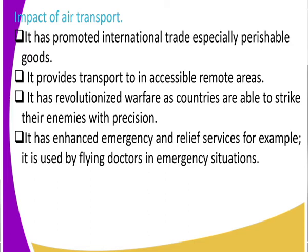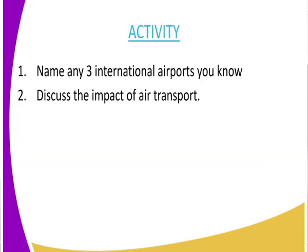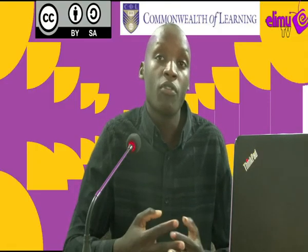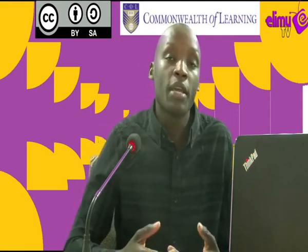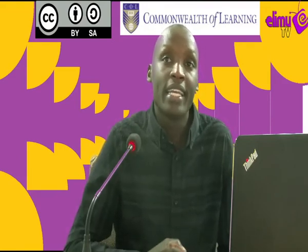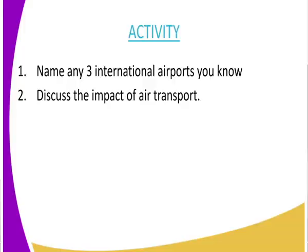Those are some of the impacts of air transport — perishable goods trade, transport to remote areas, warfare, and relief services. Now let's look at some international airports. For example, we have JFK in the US, and in Kenya we have Jomo Kenyatta International Airport. Can you name three other international airports? Also, note that an international airport and an airstrip are two different things. Get to name three international airports you know and discuss the impact of air transport.